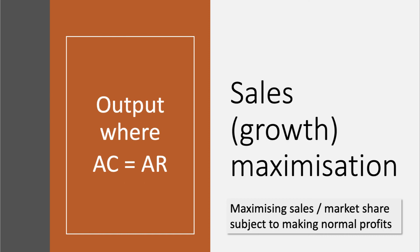Sales Growth Maximisation is an alternative objective. You maximise your sales where Average Cost equals Average Revenue. You're trying to achieve the highest sales possible subject to breaking even and therefore making normal profit.